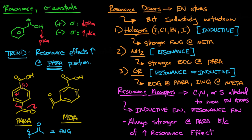Having this positive charge on that carbon would be good for stabilizing the COO⁻ functional group that results from deprotonation. On the other hand, with an electron-withdrawing group in the meta position, notice that the positive charge is generated not on the carbon directly attached to the COOH — it's still directly across from the withdrawing group, but not on that key carbon.